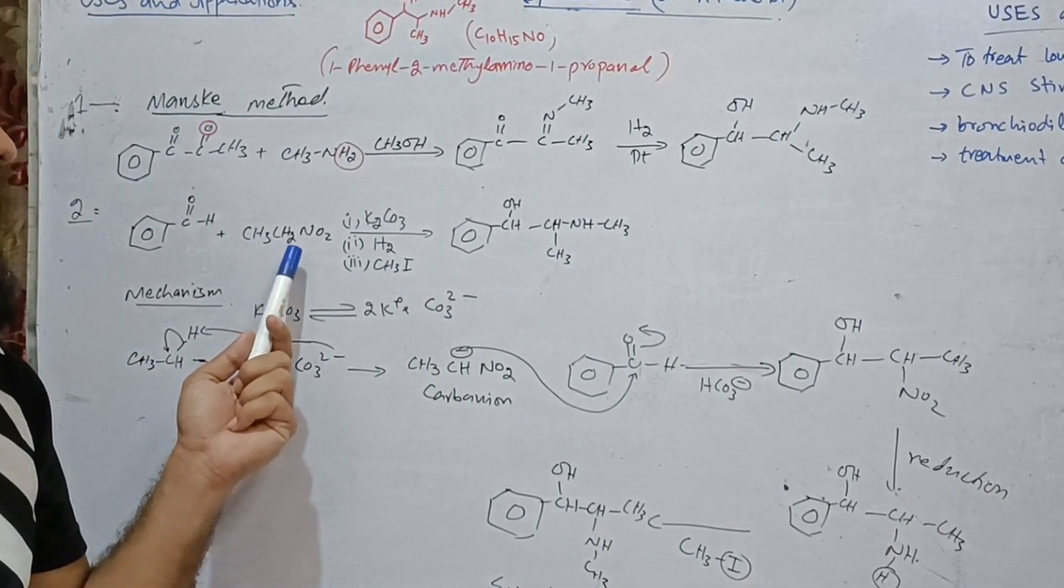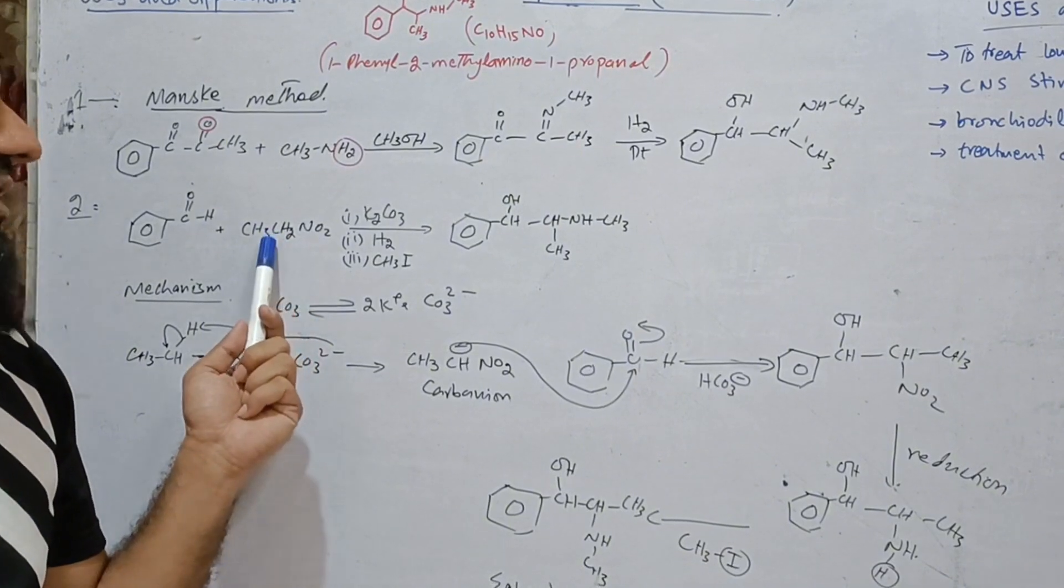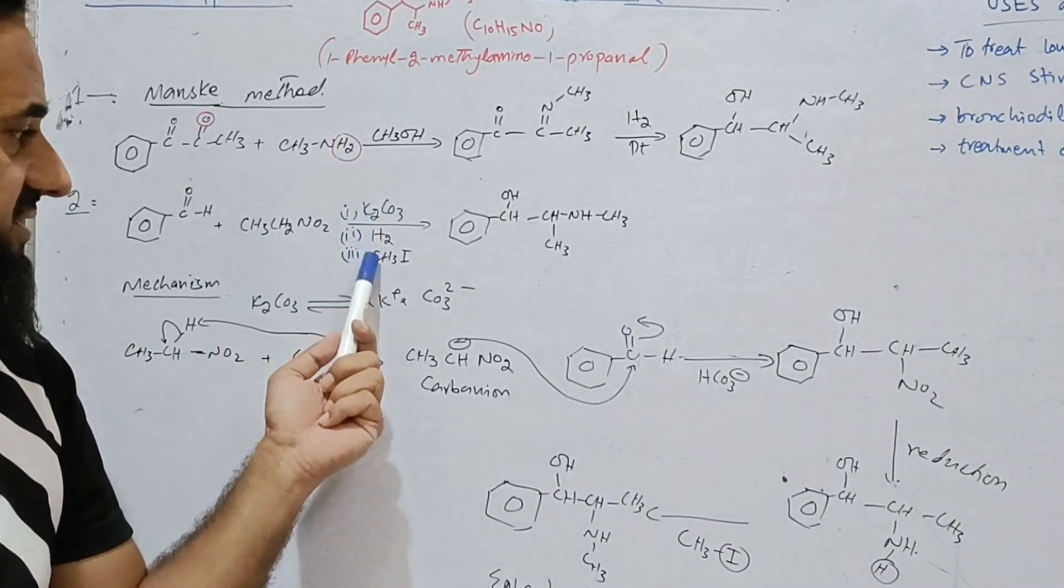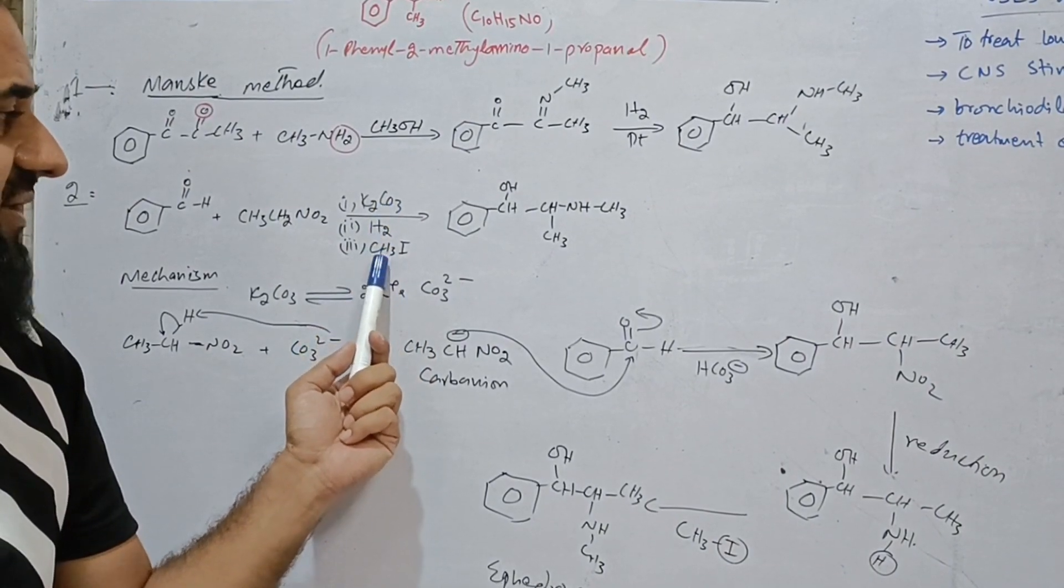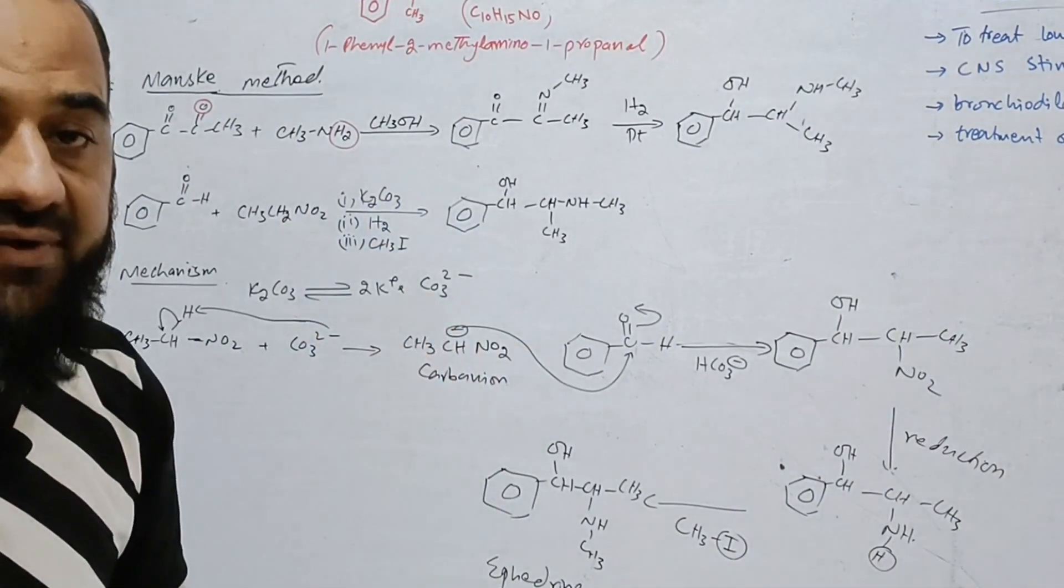In the second method, benzaldehyde reacts with nitroethane in multiple steps. In first step, we use potassium carbonate, hydrogen, then methyl iodide to get ephedrine.